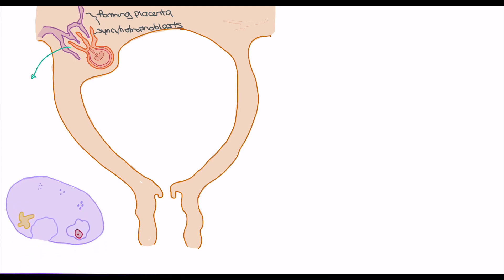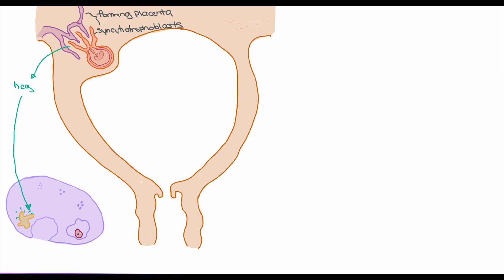In terms of hormone production, the syncytiotrophoblasts are going to release HCG, which is going to specifically interact with the corpus luteum in the ovary. HCG released from the syncytiotrophoblasts is going to aid in keeping the corpus luteum alive so it can continue to do its job — stimulating it to release hormones like estrogen, which helps increase the size of the endometrium; progesterone, which helps with milk supply while also increasing engorgement of the endometrium; relaxin, which helps relax the pelvis; and inhibin, which prevents contractions during fetal development.